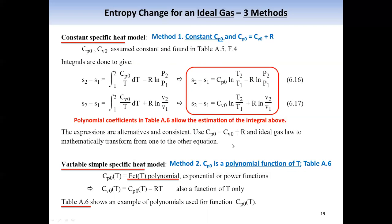The second method is based on the assumption that cp can be expressed as a polynomial function of temperature, and the coefficients of these polynomials are tabulated in Table A.6. We can integrate the polynomial to get the integral. For the second integral involving cv, we can use cv = cp - R, plug that into the integral, and estimate entropy change based on this expression.